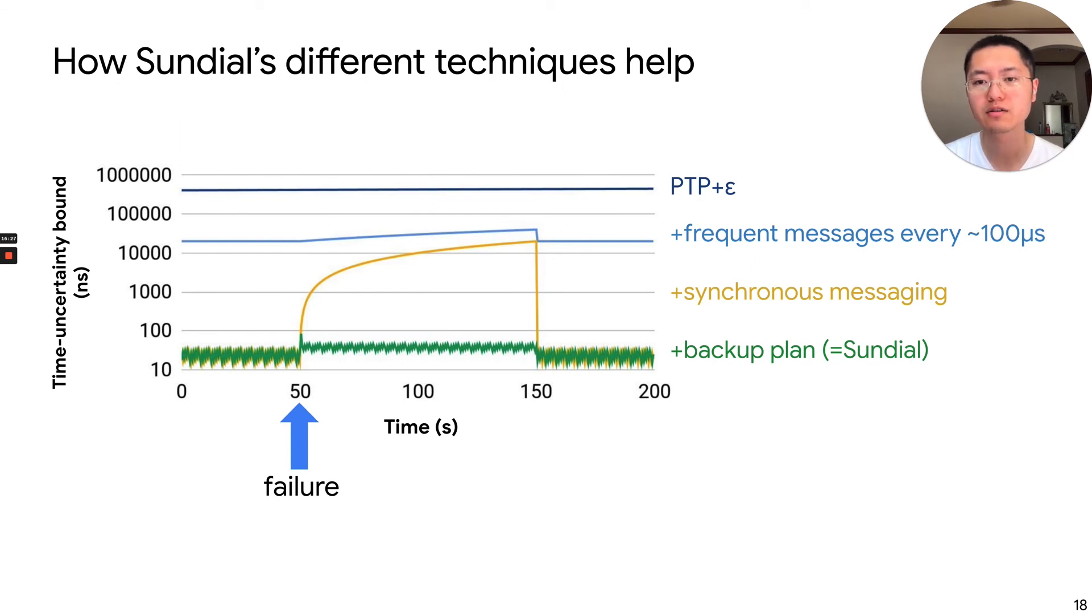We also decompose Sundial into multiple design choices, and we show how they improve the time uncertainty bounds one by one. The baseline is PTP. And we add frequent messaging on top of it, which brings down the time uncertainty bounds by an order of magnitude. But it cannot bring it further because devices cannot notice the failures that are remote. So they have to report a high value all the time. Then we add synchronous messaging, which can help the device to detect remote failures. So they can safely report a small time uncertainty bounds when there is no failures. But when failures do happen, the time uncertainty bounds still grow large, because the controller takes a long time to recover. Finally, by adding the backup plan, we consistently bound the time uncertainty at a very low level.